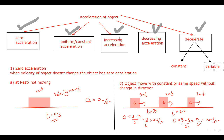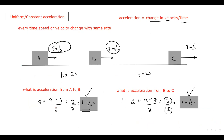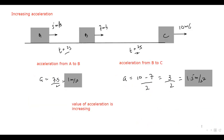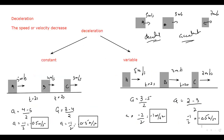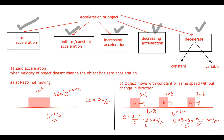To summarize: acceleration is change in velocity divided by time. Zero acceleration means the object does not change its velocity. Uniform acceleration means velocity changes at the same rate. Increasing acceleration means the value of acceleration increases. Decreasing acceleration means the value of acceleration decreases. Deceleration means the speed or velocity of the object decreases.